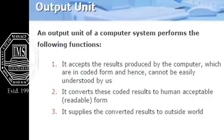The output unit accepts the results produced by the computer, which are in coded or binary form and hence cannot be easily understood by the user. It converts these coded results into a human-acceptable, readable form — or analog form. The output unit then supplies the converted results to the outside world or to the user.